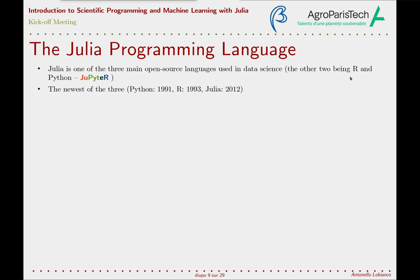Let's start to present the programming language that will be the topic of the first few lessons of this course. Julia is one of the three leading open source languages used today in data science, with the other two being R and Python. Indeed, the same name of Jupyter notebook, a tool commonly used in data science tasks, is an acronym derived from Julia, Python, and R.